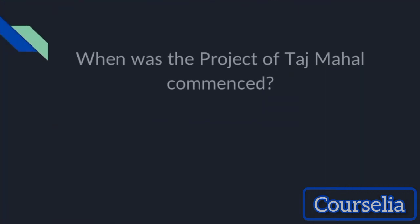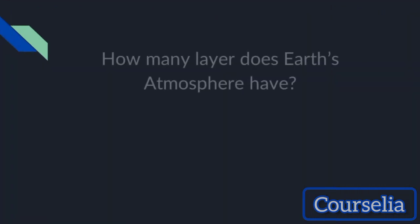When was the construction of the Taj Mahal commenced? Commence means begin or start. Taj Mahal was built by Shah Jahan and it was commenced in 1632. How many layers does Earth's atmosphere have? Four layers.